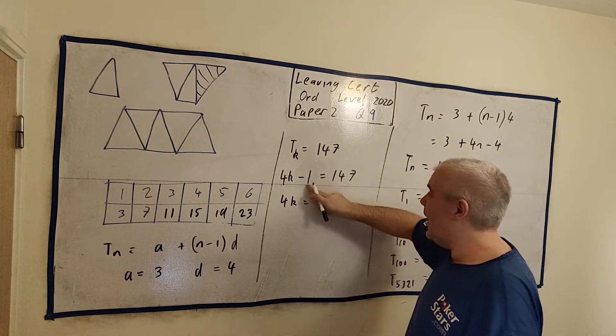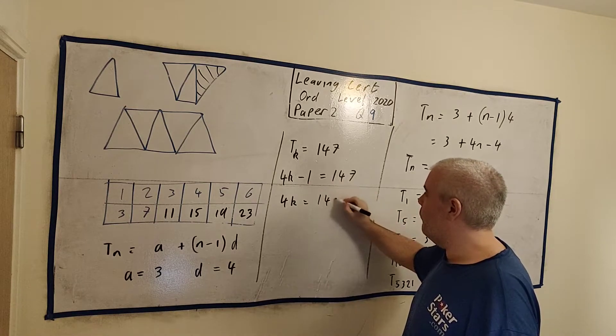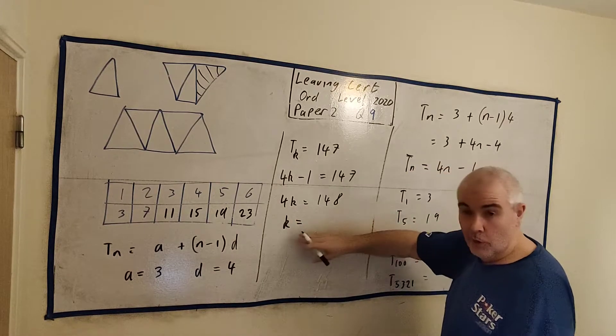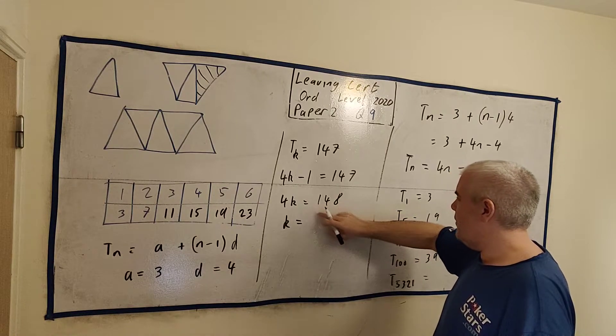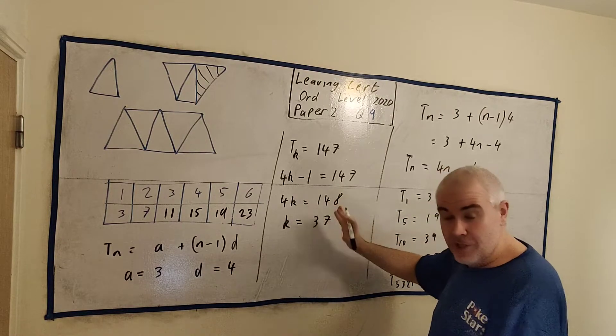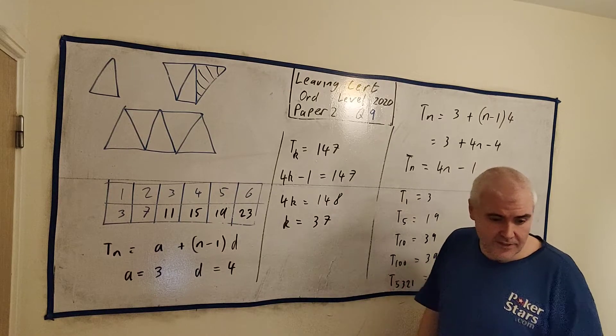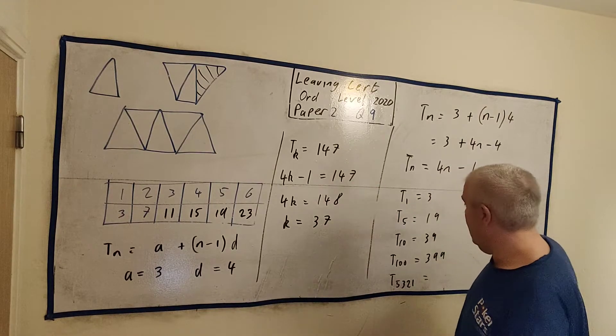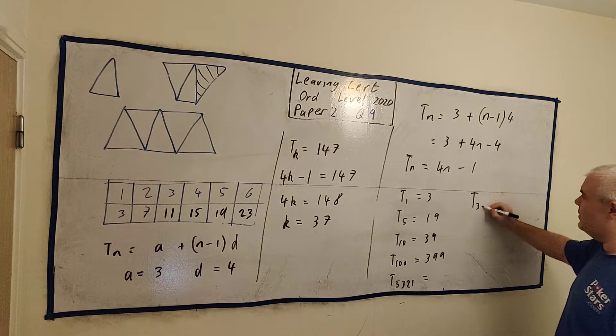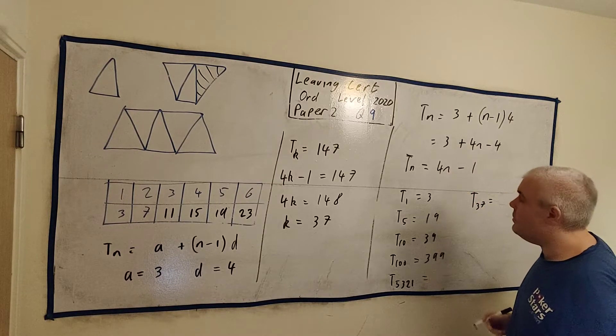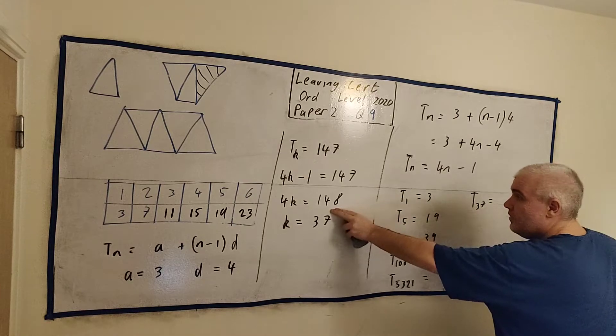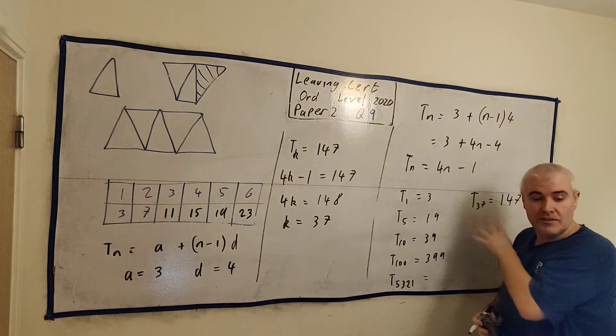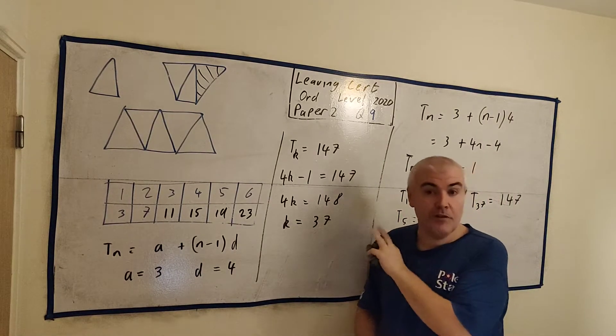4K will equal, add 1 to both sides, this will disappear and we have 148. Divide both sides by 4. This will become just K, which is what I wanted. And this divided by 4 would be 37. Double check with a calculator. And that's it. It's the 37th pattern. Pattern 37 will have this many. We can double check: T37 equals 4 times 37, we'll get 148. 148 minus 1 is 147.